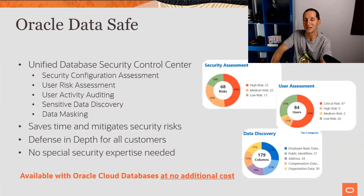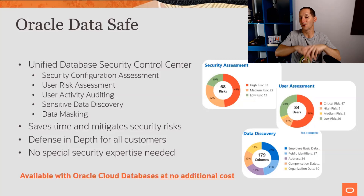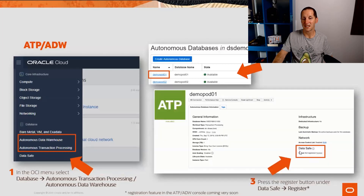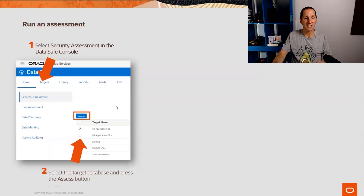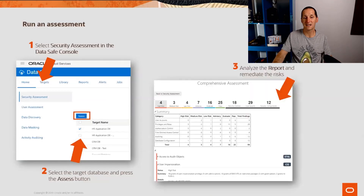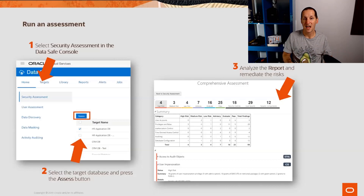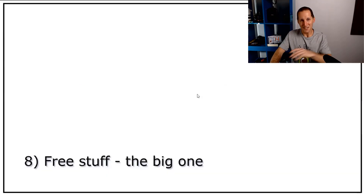Coming very soon is a new product called Oracle Data Safe, and Data Safe comes with any of our cloud databases for free. It's not a product you have to buy — it just comes there by default. It's a complete console of security facilities available for any of your cloud databases. If you've got an existing autonomous database, you simply pick the database, click a button to enable Data Safe, and it's registered. You can then run a comprehensive assessment — it includes DBSAT, our security analysis tool — enabling much more powerful security audits and checks. It costs you nothing.